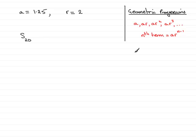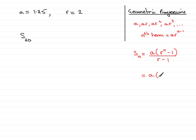What you have to remember is the standard formula for the sum of the first n terms: the first term A multiplied by r to the n minus 1, all divided by r minus 1. Some of you might use an equivalent formula — the first term multiplied by 1 minus r to the power n, all over 1 minus r.